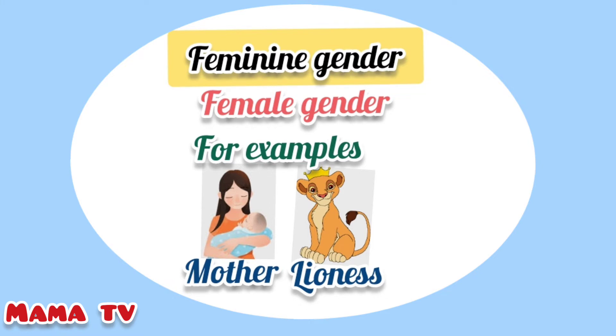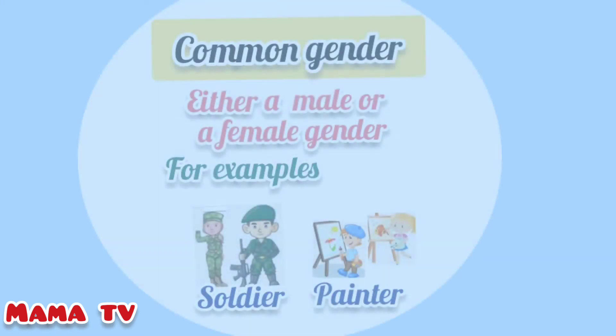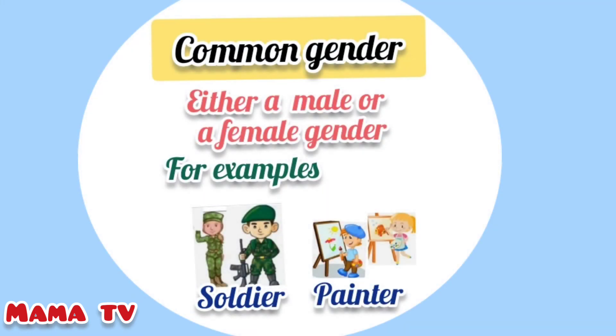Feminine gender means female gender. For example, a human being: mother. And an animal: lioness. Next gender is common gender. Common gender means either a male or a female. For example,